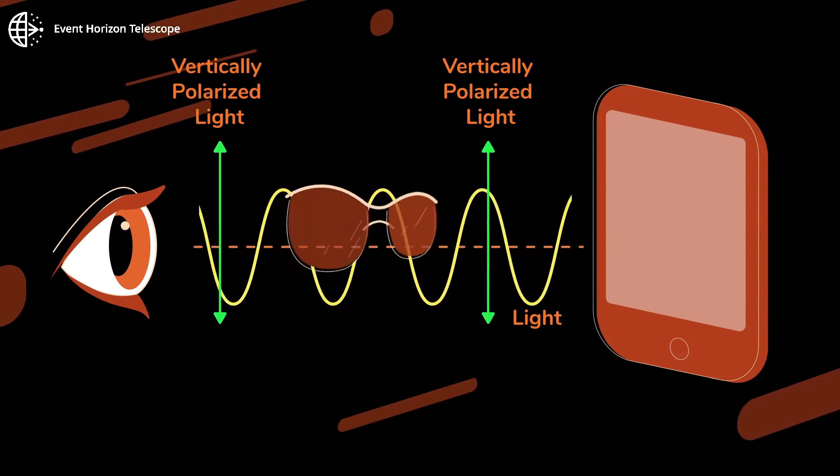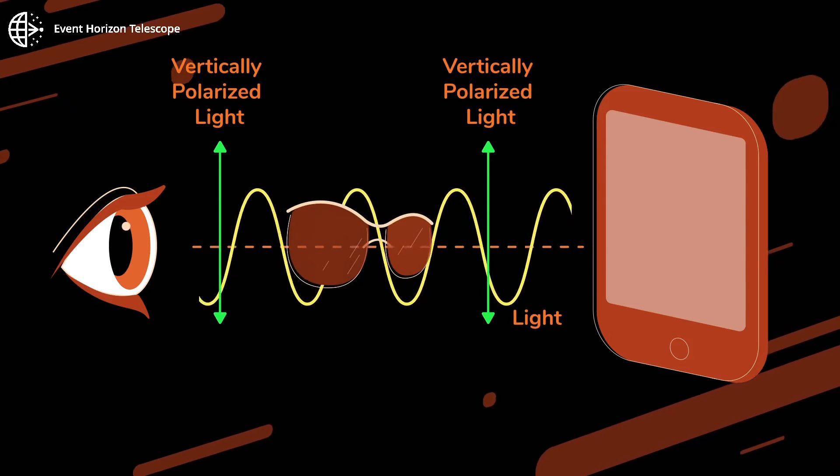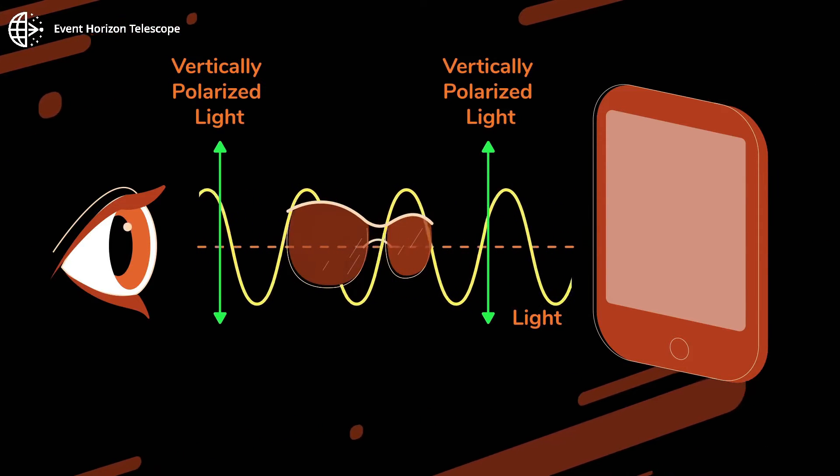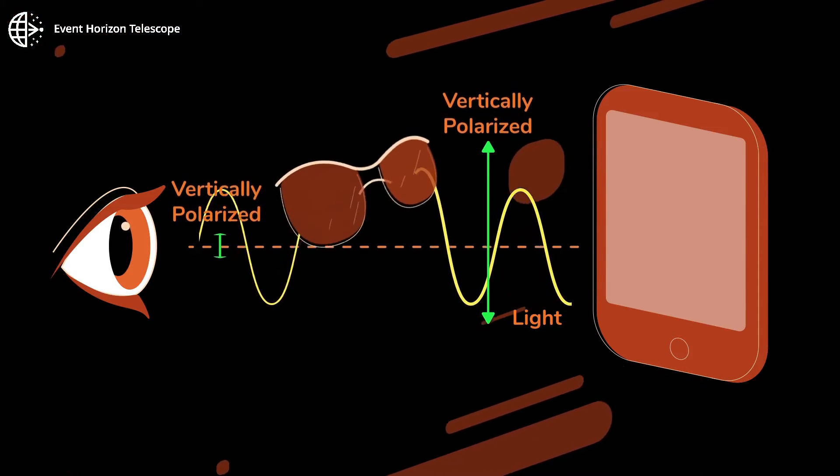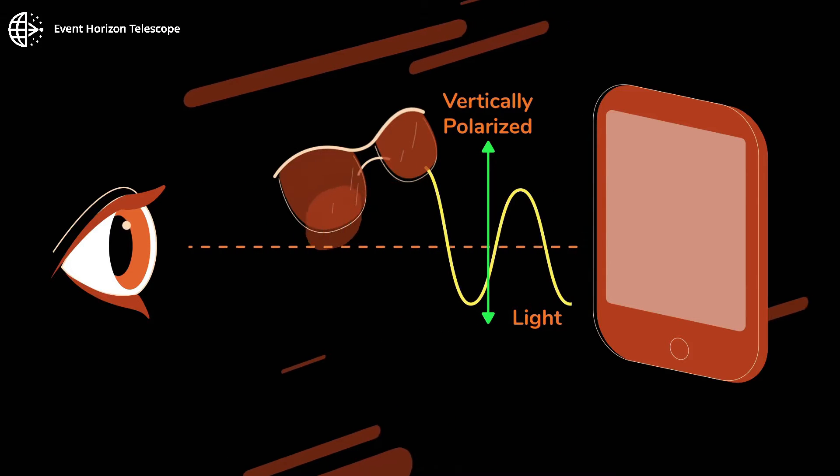Your polarized sunglasses are a polarized filter. Here, they let vertical polarization through. If we rotate them, almost all the polarized light gets blocked.